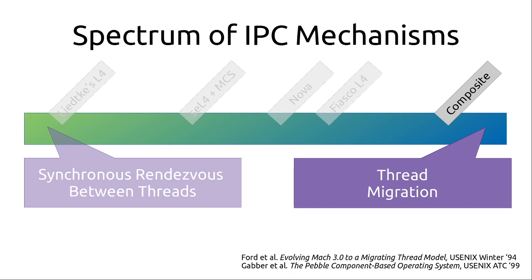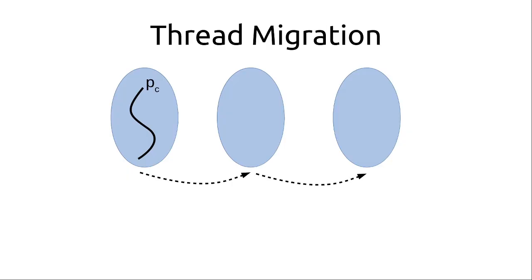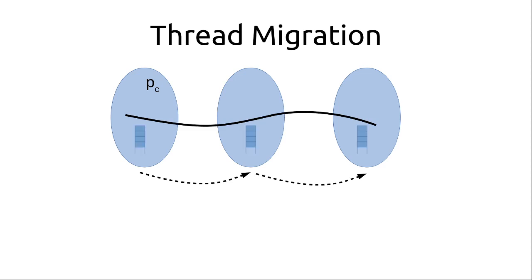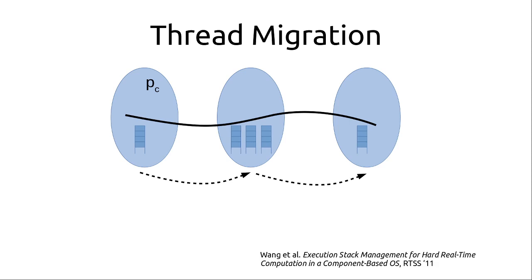Now let's look at what thread migration actually is. The general idea from several seminal papers is that if a client thread invokes a server which invokes another server, the same logical schedulable entity executes through all components. It will have different execution contexts — different register sets, stacks, and protection domains — but the schedulable entity, the thread, does not change throughout the system. One challenge is providing user-level stacks: with multiple clients invoking a shared service, you need multiple stacks within that service, or some way to limit stack count with exceptional conditions.